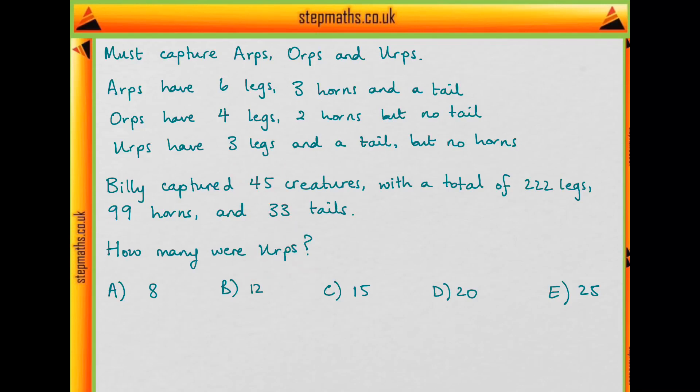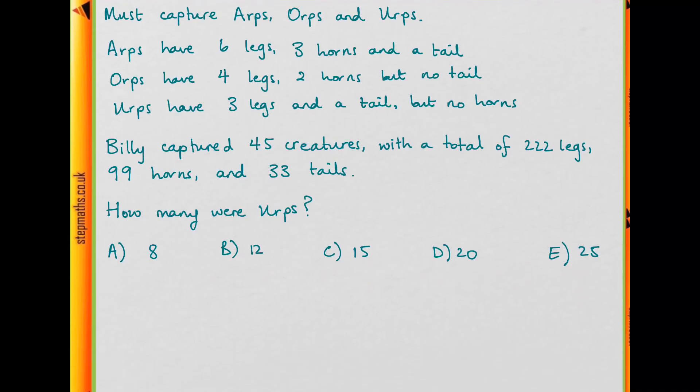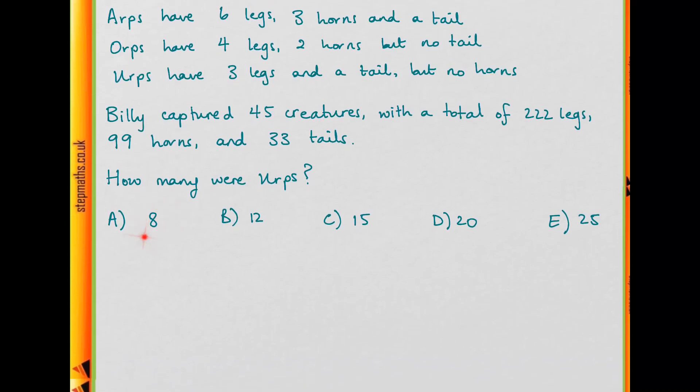Okay, so let's actually use the answers that they give us and try to eliminate the wrong ones. So first suppose we have 8 Earps. Well, let's see, Earps have 3 legs and a tail.